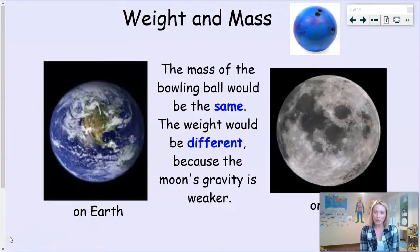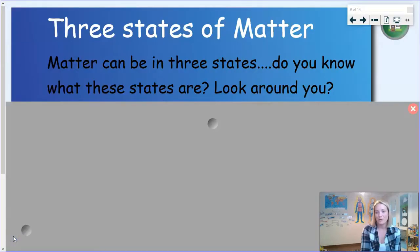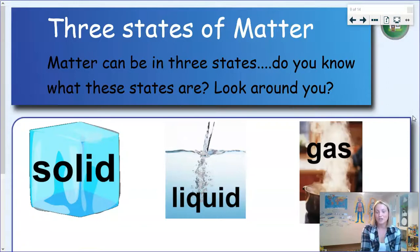So now you know what matter means. It is anything that has mass and takes up space. So what are the three states of matter then? Well, the three states of matter are solids, liquids, and gases.